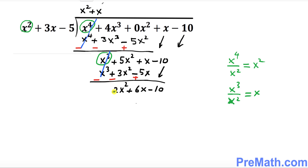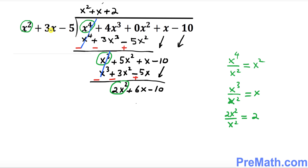Once again we're going to start the process all over again. Look at 2x². Write down 2x² on top and divide by the leading term of the divisor, which gives you 2. Write down this positive 2 right up here, and now multiply this positive 2 with all of the terms of the divisor.